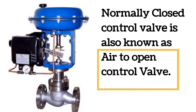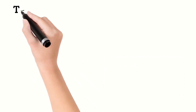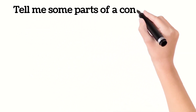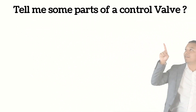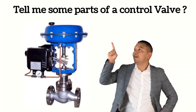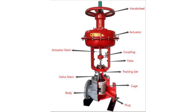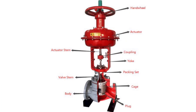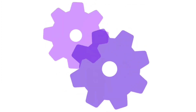The next question asks you to name the parts of a control valve. Its parts are: actuator, wheel, coupling, packing set, cage, plug, body, valve stem, and actuator stem.